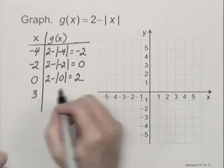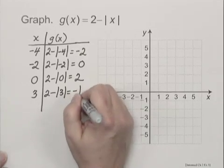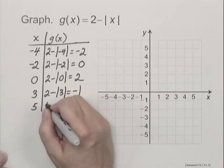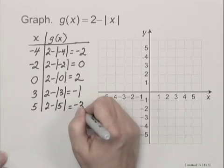When x is 3, we have 2 - |3|. 2 - 3 is -1. When x is 5, we have 2 - |5|. 2 - 5 is -3.